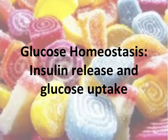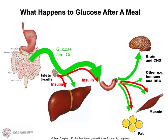This next video is looking at a bit more detail about insulin release and glucose uptake, and therefore it's obviously also dealing with blood glucose following a meal. So just a reminder of what happens to glucose after a meal. The green arrows shown everywhere indicate what happens to glucose after a meal, and the red indicates what happens with the action of insulin.